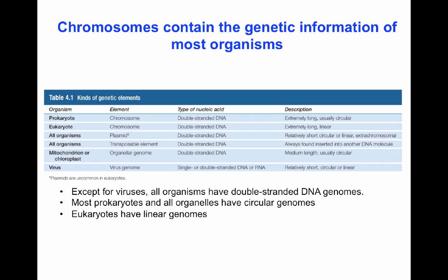The chromosomes contain the genetic information that most organisms have. In all organisms like viruses, double-stranded DNA makes the genetic material for the chromosome. In prokaryotes, the chromosomes are usually circular, though some of them are actually linear in very few cases. Eukaryotes, on the other hand, are exclusively linear chromosomes.